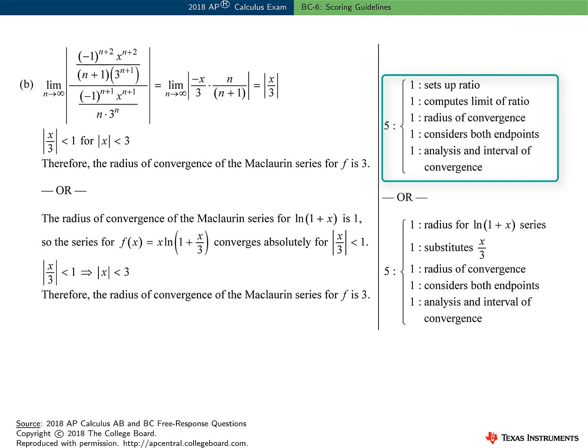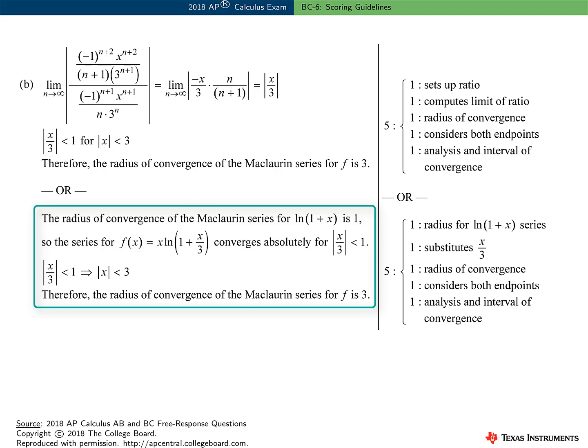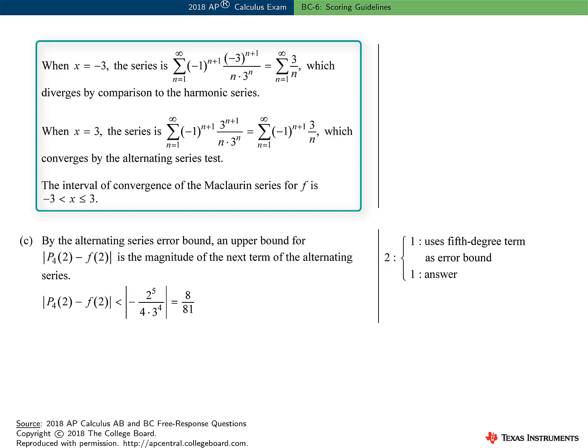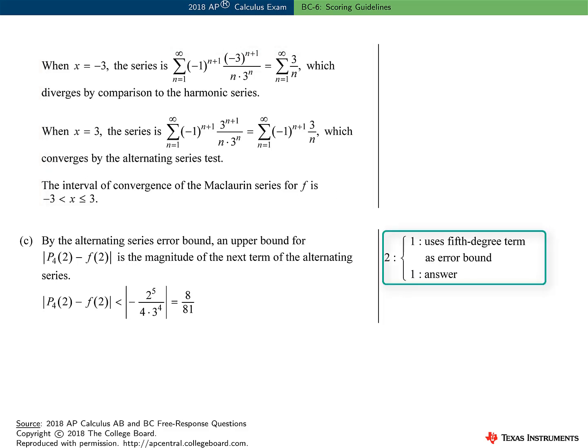Part B was worth five points, and this is a pretty typical rubric for this kind of question. One point for setting up the ratio associated with the ratio test. One point for computing and sufficiently communicating the limit of the ratio. One point for finding the radius of convergence. Then the student needs to check the endpoints of the interval: one point for considering both endpoints, and one point for the analysis and the final interval of convergence. Note that there is an alternate solution on the scoring standard for earning the first three points, involving the known radius of convergence of the Maclaurin series for log of 1 plus x. Finally, Part C was worth two points: one point for using the fifth degree term as the error bound, and one point for the final answer.